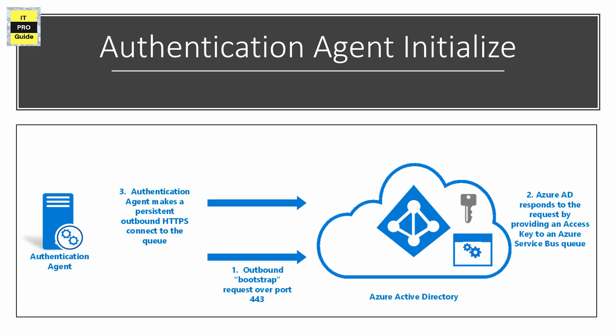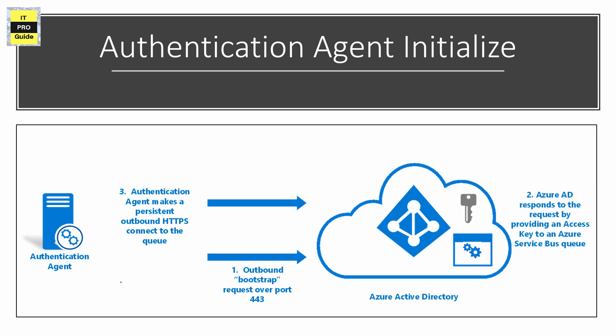Now let's see how the authentication agent initializes after installation — that is, how it starts communicating with Azure Active Directory. In the first step, the authentication agent makes an outbound bootstrap request to Azure AD over port 443, using a mutually authenticated HTTPS channel, with the same certificate used in the installation step.